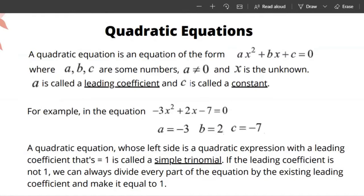Quadratic equations are equations of the form ax² + bx + c = 0, where a, b, and c are numbers. a cannot equal 0, otherwise it's not going to be a quadratic equation. x is the unknown value that we're solving for. a is called the leading coefficient and c is called a constant. c in this equation is also the y-intercept of the parabola.